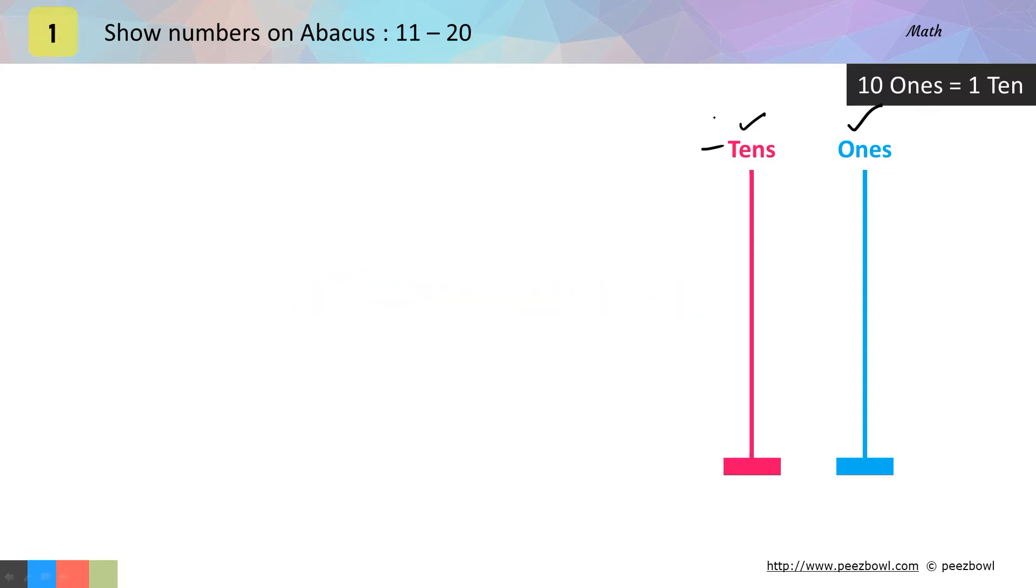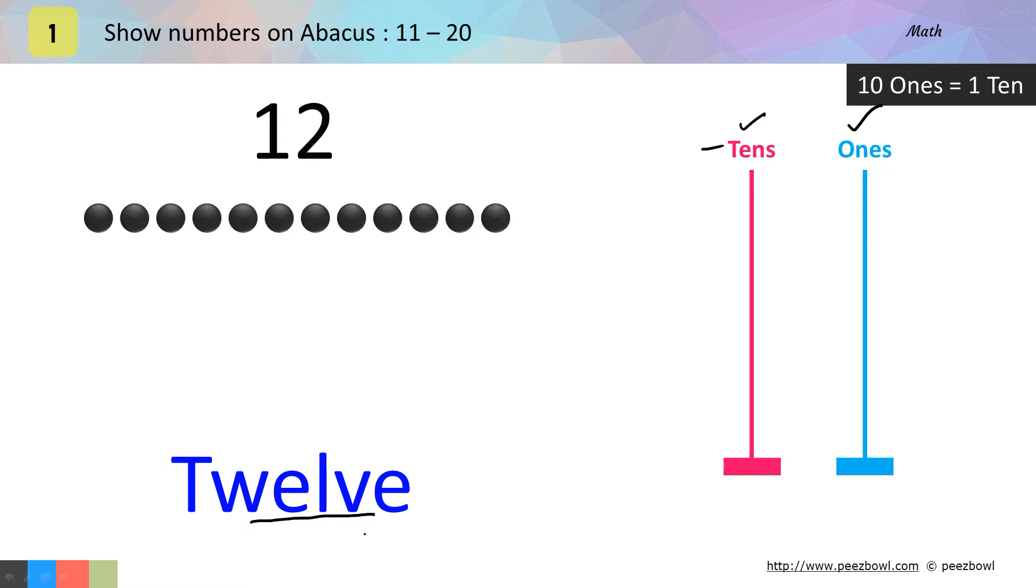I will take first number 12. See below how we write 12 in English. Now, let us show 12 on this abacus. For this, I will bring 12 balls. Here we have 12 balls.